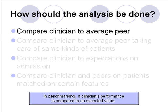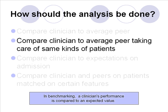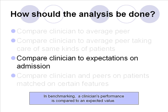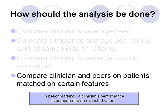There are at least four distinct methods of conducting benchmarking of providers. The first method is to compare clinicians to the average of their peers. The second method is to compare clinicians to the average peer care of the same kinds of patients, controlling for the types of patients. The third method is to compare clinicians to expectations on admission, usually derived from the severity of the patient's health. The last method is to compare clinicians and peers on patients matched on certain features.